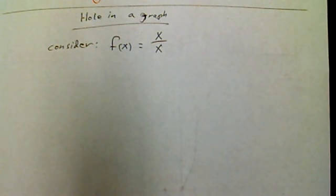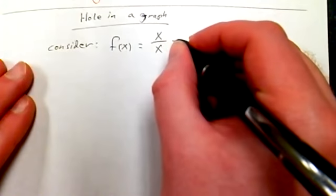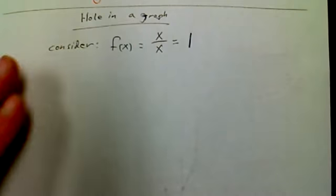Let's consider this function: f(x) equals x over x. You're probably looking and you're like, what the heck? Well, remember the first thing I want to do is fully simplify this if I can. So I'm going to say, well, this is simply just equal to one.